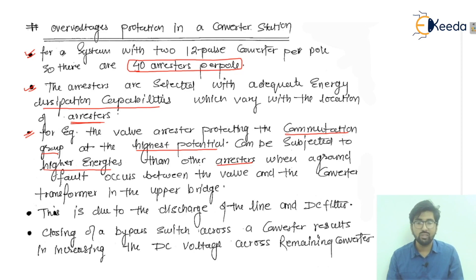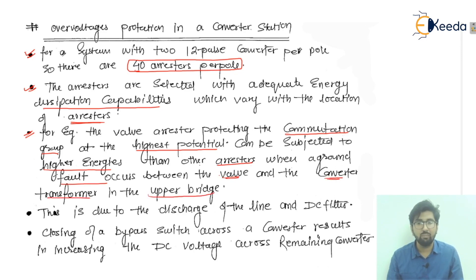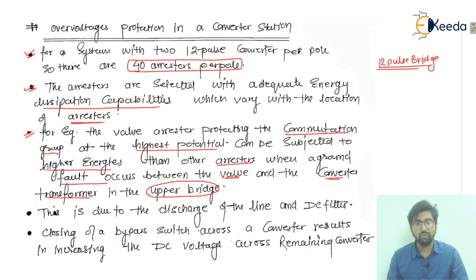This occurs when a ground fault occurs between the wall and the converter transformer. In the case of the 12-pulse bridge, it is going to have one 6-pulse bridge in series with another 6-pulse bridge, and we are talking about the upper bridge in this context.